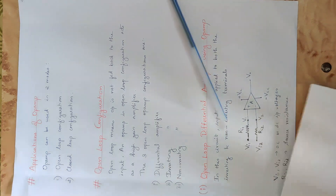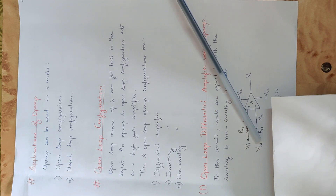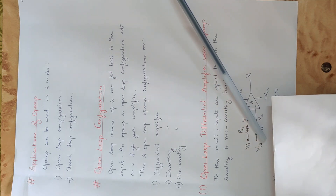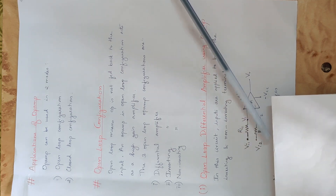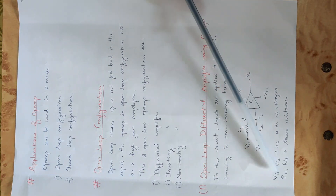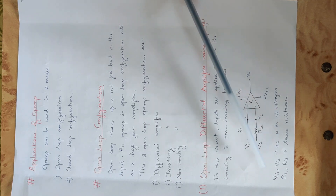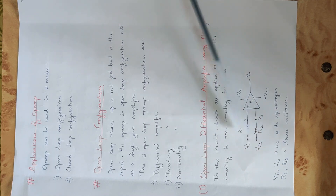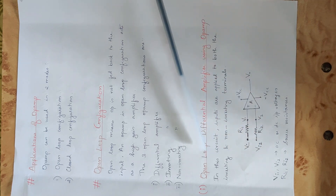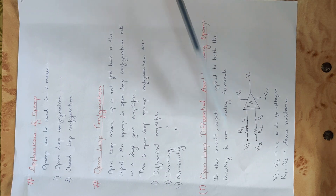The two inputs are Vi1 and Vi2. Vi1 is one input voltage and Vi2 is the second input voltage. There are two source resistances Ri1 and Ri2, corresponding to Vi1 and Vi2, which can be AC or DC input voltages. Ri1 and Ri2 are called source resistances. This is the open loop differential amplifier using op-amp figure.